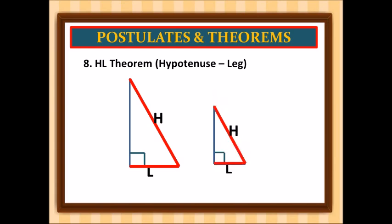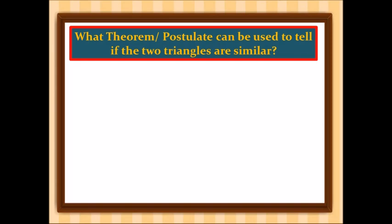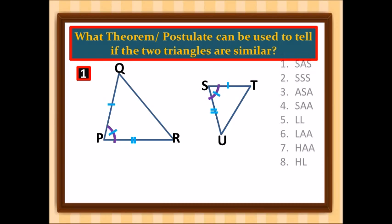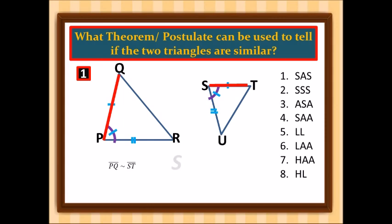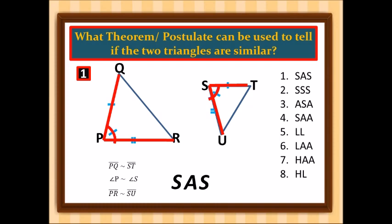Now we are going to choose what particular theorem or postulate to use to prove that two triangles are similar. In the first example, the sides have the same tick marks, meaning they are similar. So PQ is similar to ST — that is a side. Angle P is similar to angle S — that is an angle. And PR is similar to SU — that is a side. So for the first example, we will be using the side-angle-side postulate.